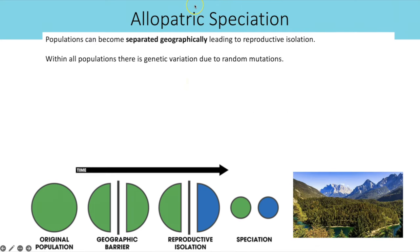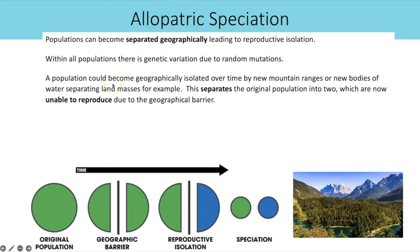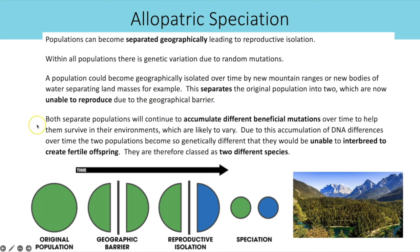In allopatric speciation, a population becomes geographically isolated — perhaps by a new mountain range or bodies of water separating land masses — dividing the original population into two groups unable to reproduce across the barrier. Both populations continue to accumulate different beneficial mutations to survive their likely differing environments, and due to this accumulation of DNA differences over time, they become so genetically different that they can no longer interbreed to produce fertile offspring and are classed as different species.